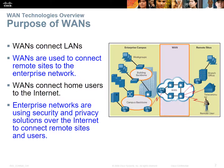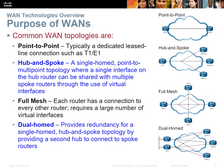We need a wide area network in order to connect those networks to each other. The most common types of WANs are: classic point-to-point, hub-and-spoke like Frame Relay, full mesh, and dual-home. The full mesh is the most ideal but also the most expensive, so typically we go with hub-and-spoke using a product like Frame Relay or some sort of VPN solution.